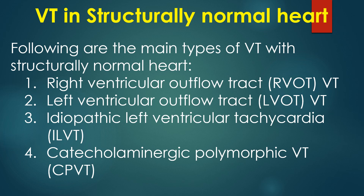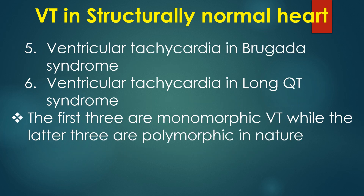The main types are: 1. Right ventricular outflow tract VT; 2. Left ventricular outflow tract VT; 3. Idiopathic left ventricular tachycardia; 4. Catecholaminergic polymorphic ventricular tachycardia; 5. Ventricular tachycardia in Brugada syndrome; 6. Ventricular tachycardia in long QT syndrome. The first three are monomorphic VT, while the latter three are polymorphic in nature.